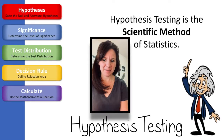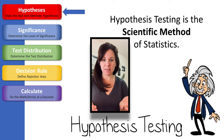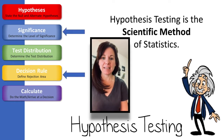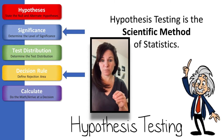We're back with our study on hypothesis testing. In the last lesson we talked about how to set up the null and the alternate hypotheses, and today we're going to be talking about significance levels and decision rules.